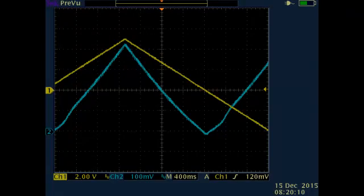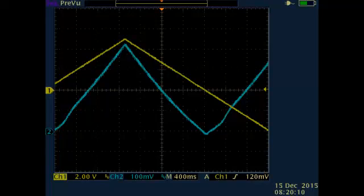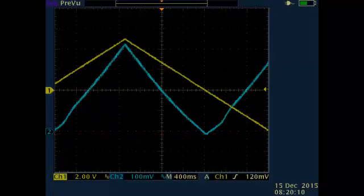You'll notice the sensor output is twice the frequency of the current. That's because the sensor is omnipolar, meaning it has a positive output regardless of the field polarity. So its output is a full wave, rectified version of the current.